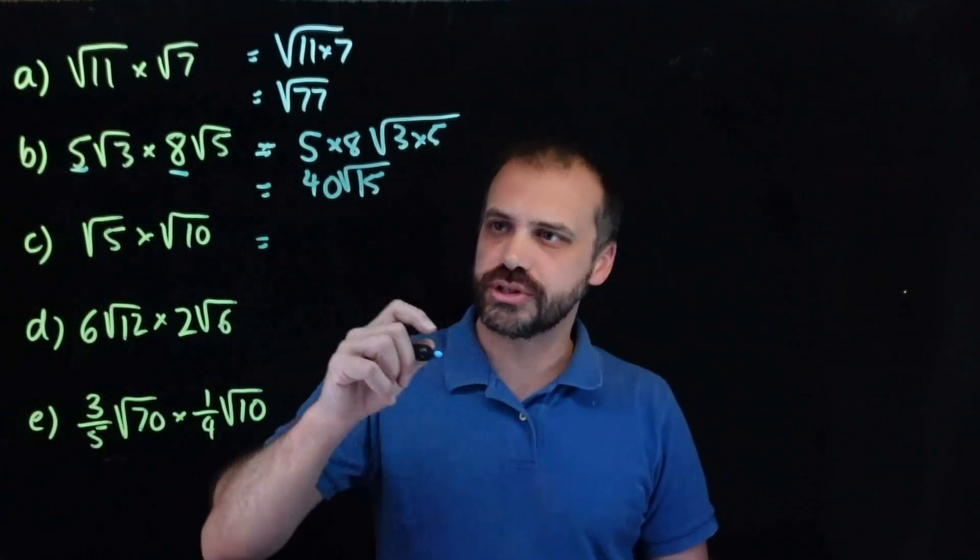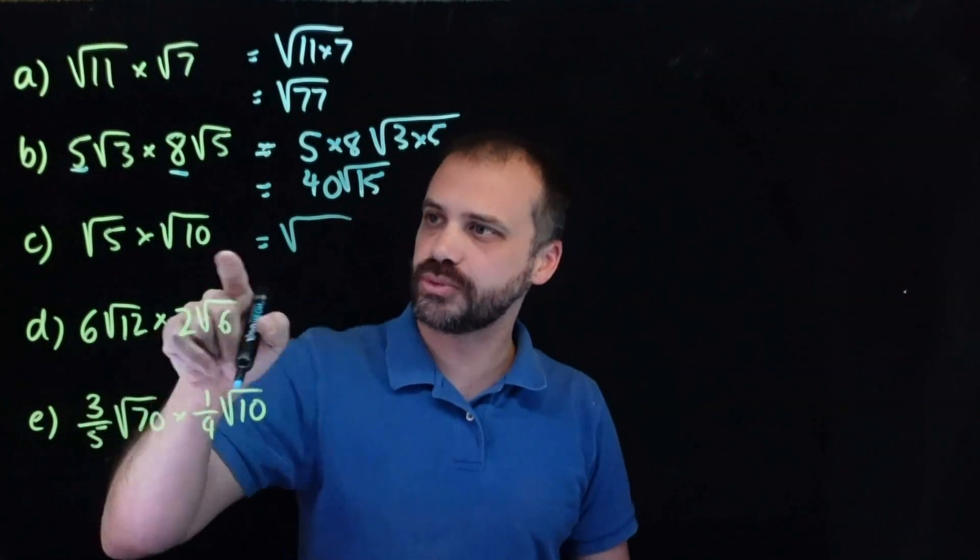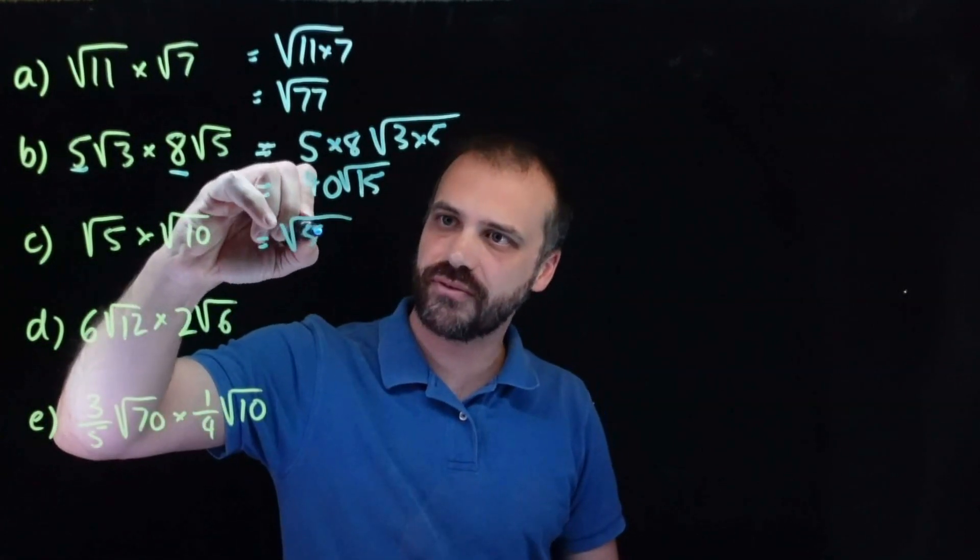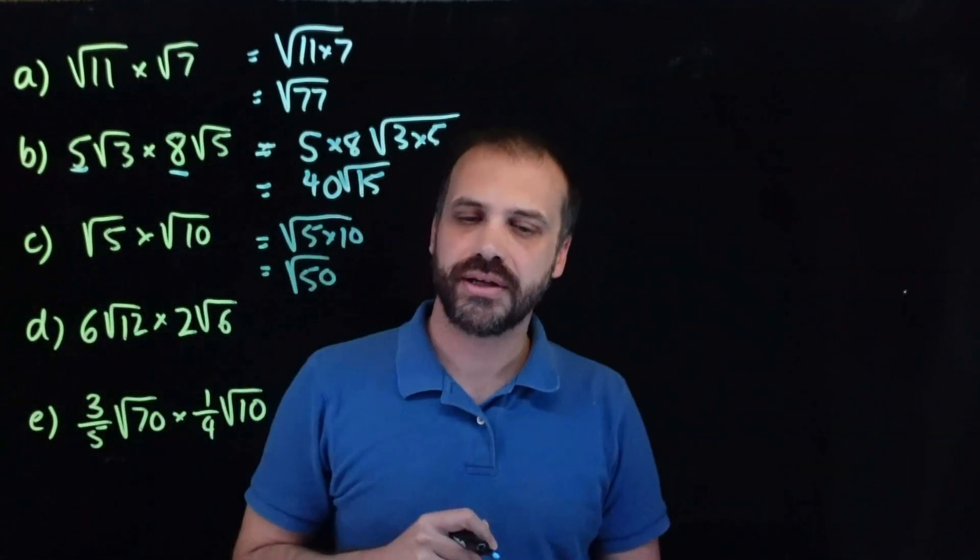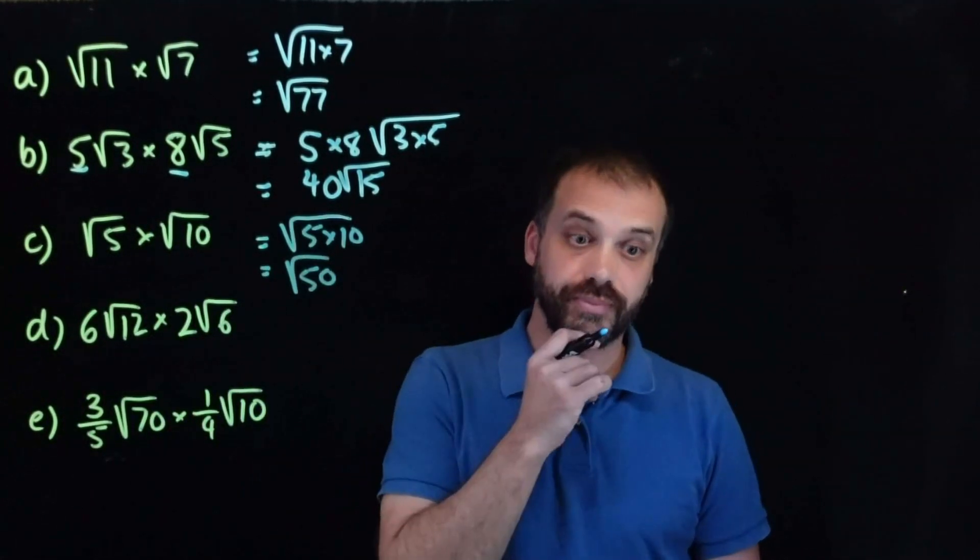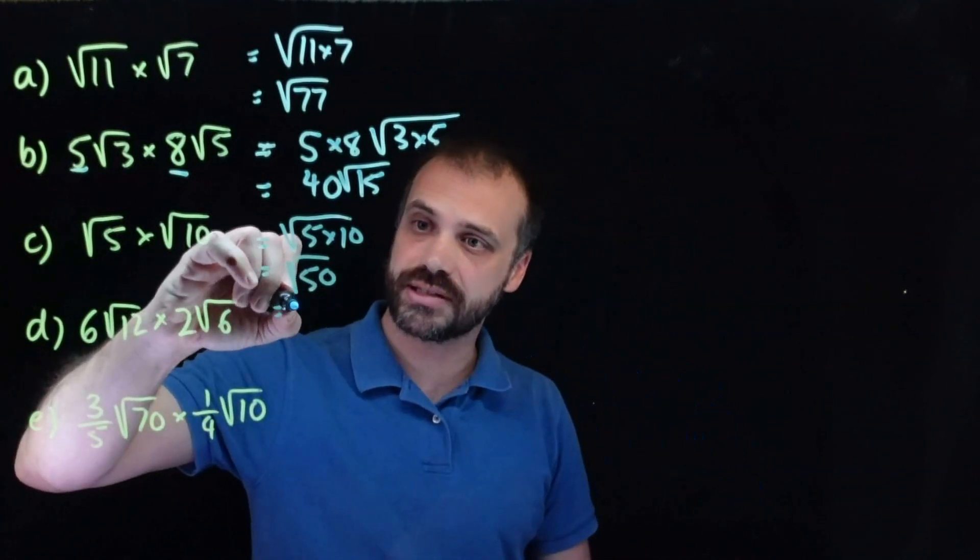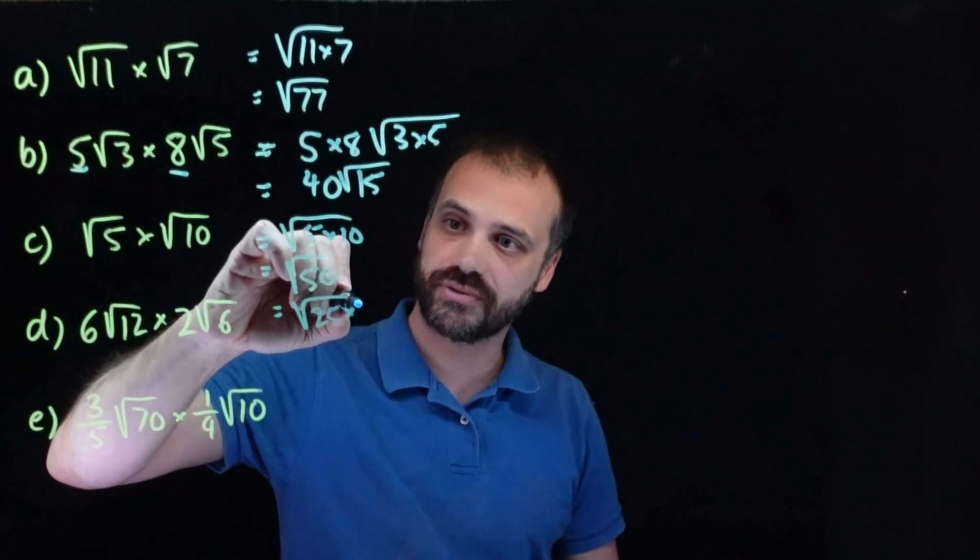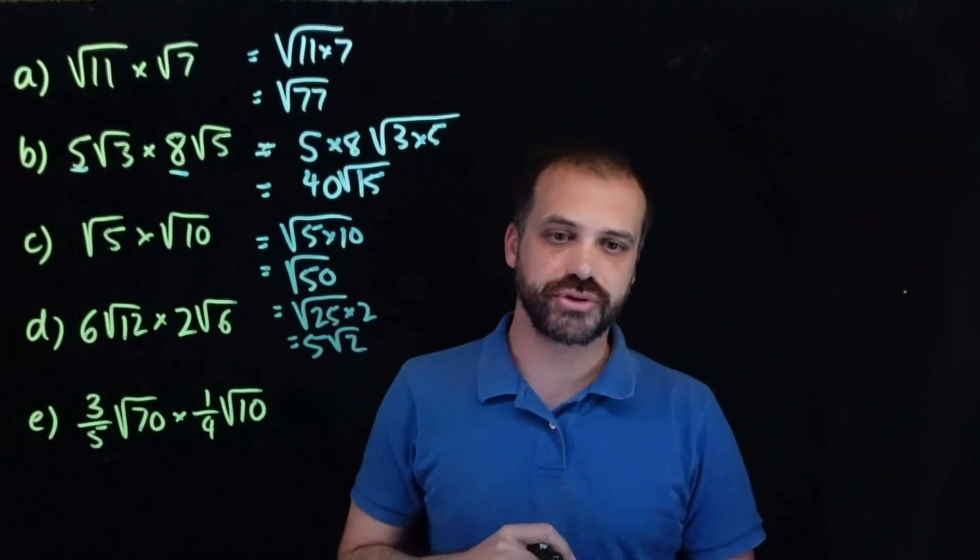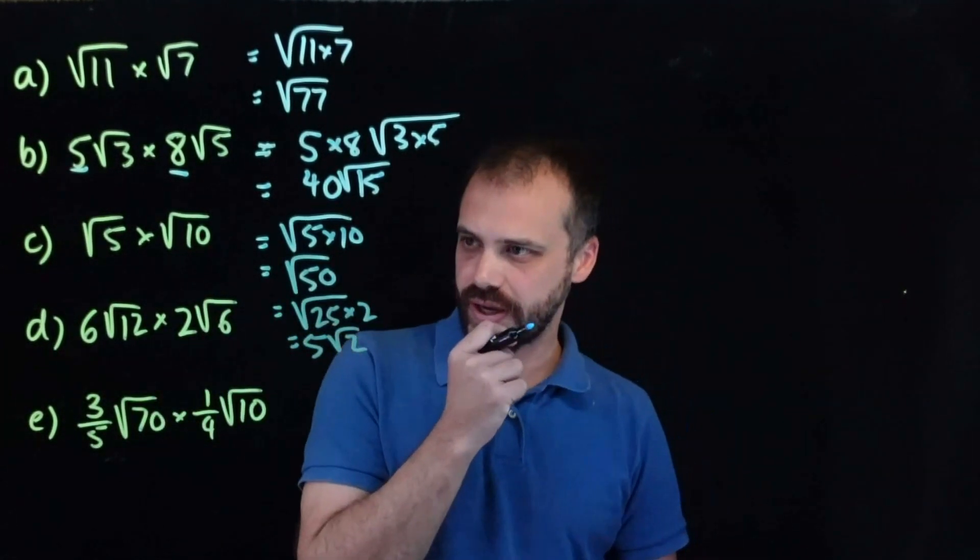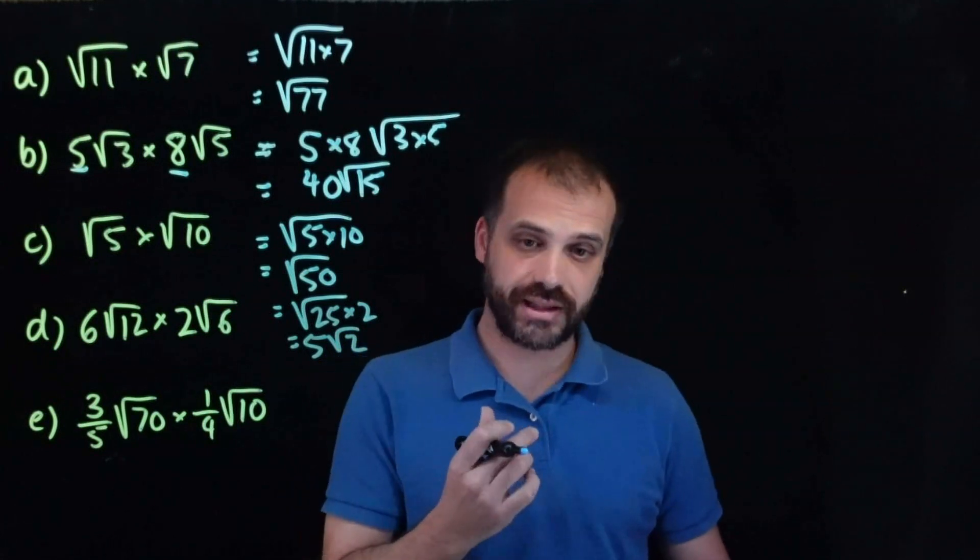Root 5 times root 10. Again, multiply the things on the inside, 5 times 10. That's root 50. Can we simplify that? Yes, we can. Root 50 is the same as 25 times 2, which is the same as 5 root 2. Don't forget to simplify at the end.